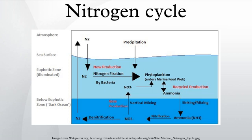Nitrogen entering the euphotic zone is referred to as new nitrogen because it is newly arrived from outside the productive layer. The new nitrogen can come from below the euphotic zone or from outside sources such as upwelling from deep water and nitrogen fixation. If the organic matter is eaten, respired, delivered to the water as ammonia, and reincorporated into organic matter by phytoplankton, it is considered recycled or regenerated production. New production is an important component of the marine environment; only continual input of new nitrogen can determine the total capacity of the ocean to produce a sustainable fish harvest.